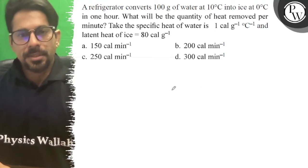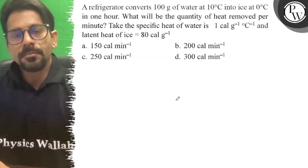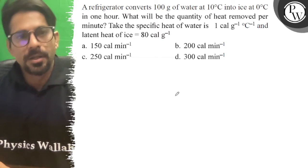Hello Machu, let's see the question. A refrigerator converts 100 gram of water at 10 degree celsius into the ice of 0 degree celsius in 1 hour.